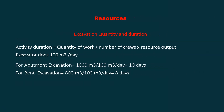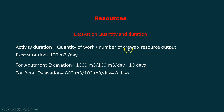For excavations, if you have one excavator and the excavator can do 100 cubic meters a day, the abutment excavation quantity is 1000 divided by 100, giving you 10 days. For the bent you have 800 divided by 100, giving you 8 days. So the duration equals quantity of work divided by number of crews and how much each crew can do.